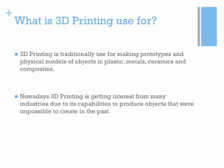3D printing has traditionally been used for making prototypes and physical models as part of the product development cycle. Companies make models of objects, usually in plastic, but also in metal, ceramic, or composites. These days, 3D printing is getting interest from many other industries due to its unique capability of producing objects with complex geometries that are difficult to manufacture by conventional means.